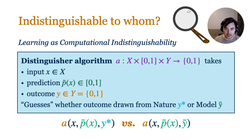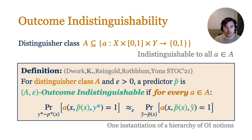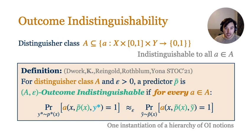At an intuitive level, a predictor p-tilde is outcome indistinguishable if you cannot tell whether the outcome was sampled according to nature or from the predictor. For this notion to make sense, we appeal to computational indistinguishability, parameterizing by distinguisher algorithms that take in input x, prediction p-tilde of x, and outcome y, and guess whether the outcome came from nature or from p-tilde. Formally, given a distinguisher class A and error parameter epsilon, a predictor p-tilde is A-epsilon-OI if for every algorithm in the class, the acceptance probability on outcomes from nature is epsilon-close to that on outcomes from the predictor.